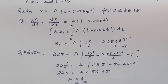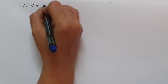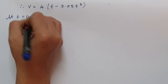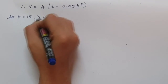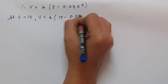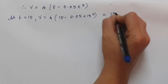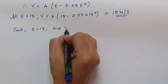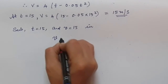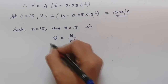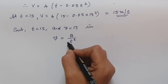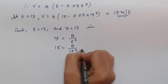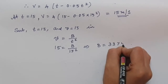With A = 4, V = 4(t − 0.05t²). At t = 15, V = 4(15 − 0.05 × 225) = 15 m/s. Substituting t = 15 and V = 15 into V = B/t²: 15 = B/15², which gives B = 3375.